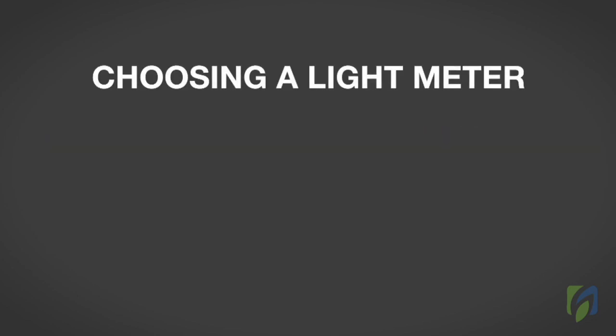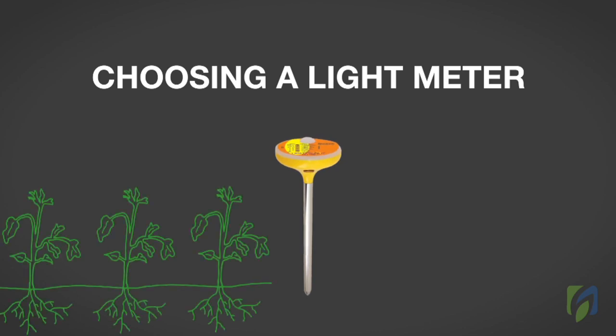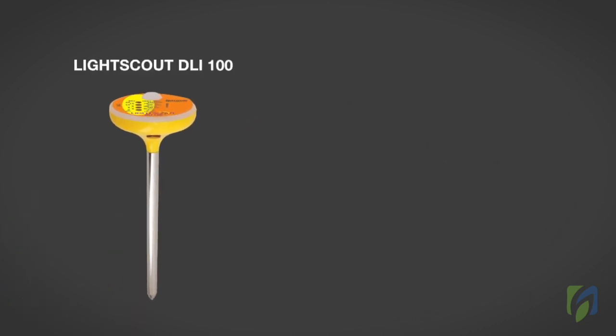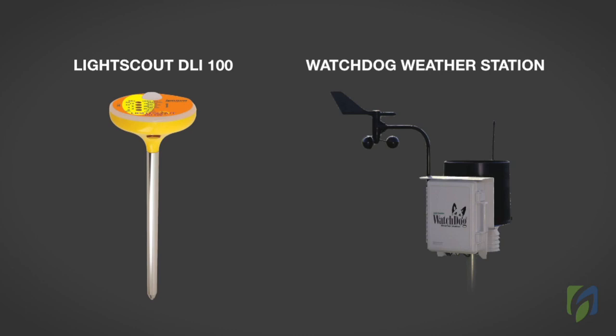Choosing a light meter. Meters are now available that automatically measure the DLI being received by a crop. When measuring DLI, all light sensors should be placed next to the crop and kept at a canopy height to accurately measure the light level. The Light Scout DLI 100 meter and the Watchdog weather station are two mobile self-contained devices from Spectrum Technologies that can be used for measuring DLI.